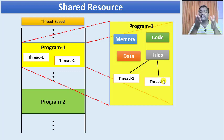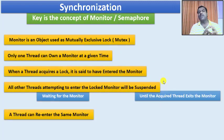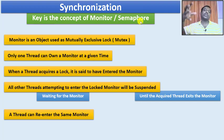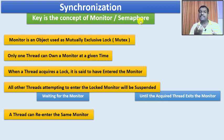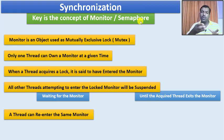Once thread one completes, thread two should become active and acquire the updated content. This understanding between threads is what we call synchronization — both threads should work in synchronization. There are techniques to bring synchronization into a program. When we talk about synchronization, the key concept is monitor or semaphore. When a thread is accessing a file, we say the thread is in the monitor. Until this thread is in the monitor, no other thread can enter the monitor. Once it leaves, the other thread can enter.